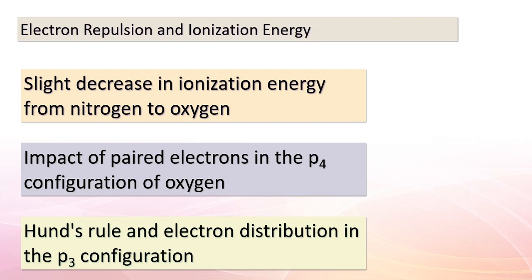Remembering Hund's rule, we know that each electron occupies a different p orbital. This strategic distribution minimizes the repulsion between the three electrons, resulting in a slightly lower ionization energy for oxygen. This principle underscores the delicate balance of electron interactions within atomic structures. As we progress, keep in mind that the periodic table holds a wealth of insights into the behavior of elements.